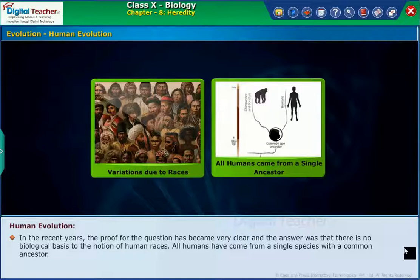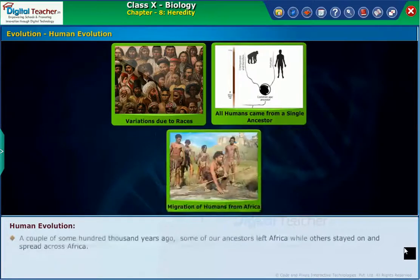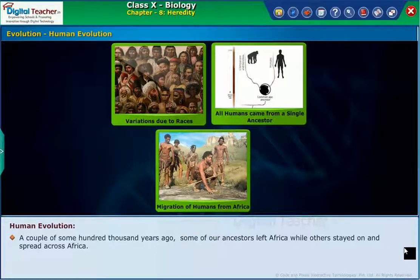All humans have come from a single species with a common ancestor. We all came from Africa because the earliest members of the human species, Homo sapiens, were traced there. A couple of hundred thousand years ago, some of our ancestors left Africa while others stayed on and spread across Africa.